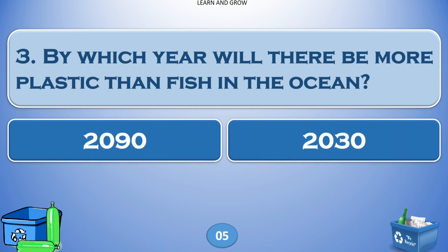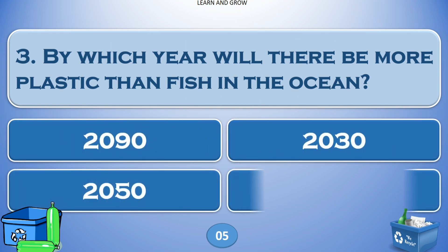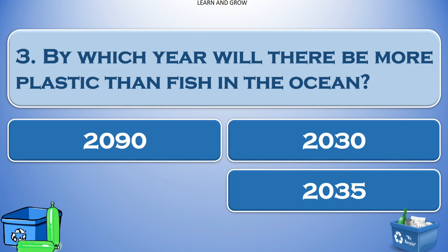By which year will there be more plastic than fish in the ocean? Options: A) 2090, B) 2030, C) 2050, or D) 2035. The answer is 2050.